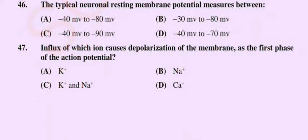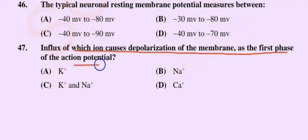Question number 47: Influx of which ion causes depolarization of the membrane at the first phase of the action potential? Option A: potassium ion, option B: sodium ion, option C: sodium and potassium ion, option D: calcium ion. The correct option is option B: sodium ion.